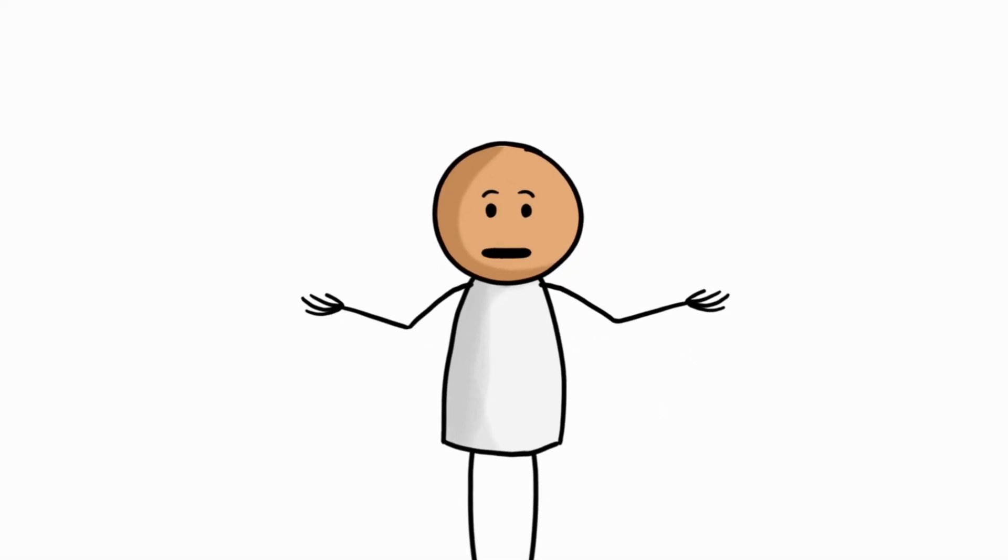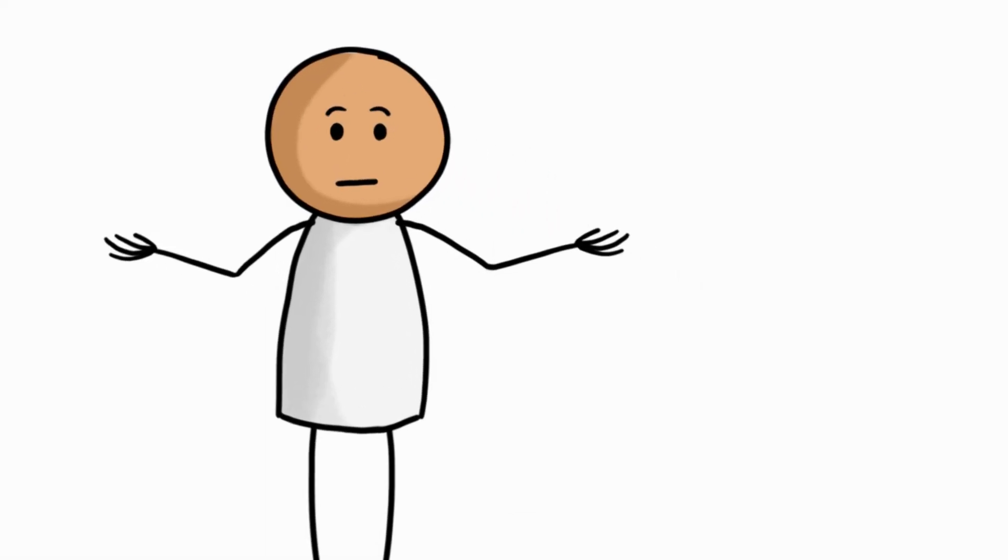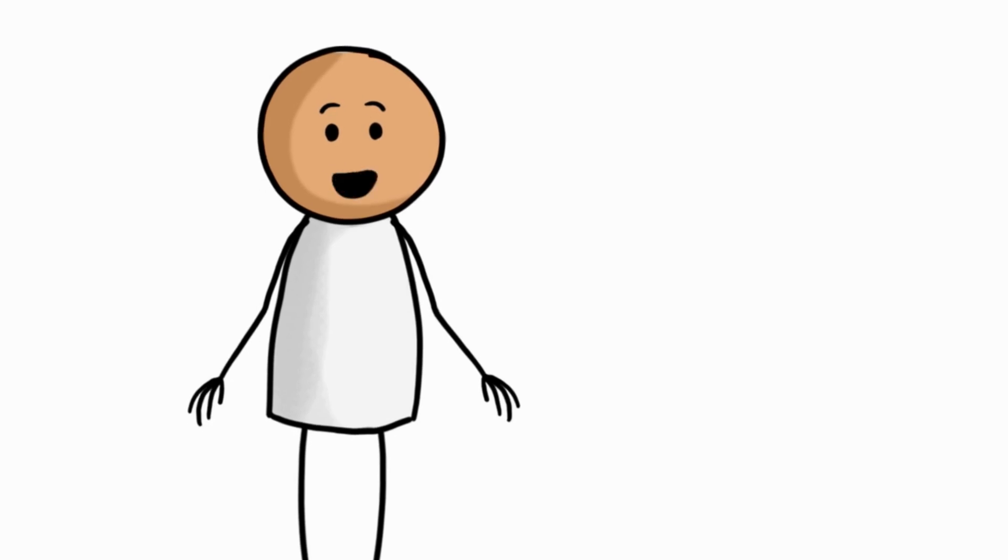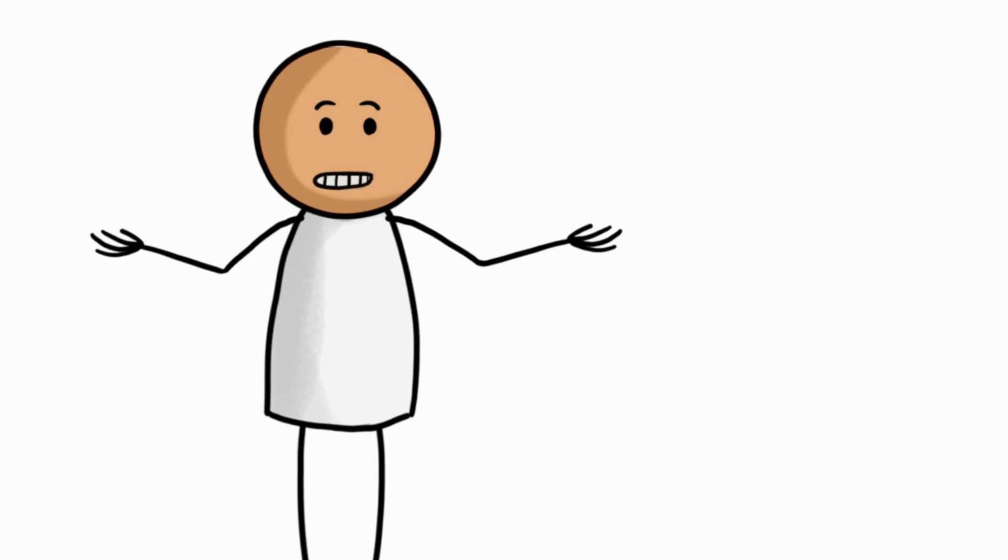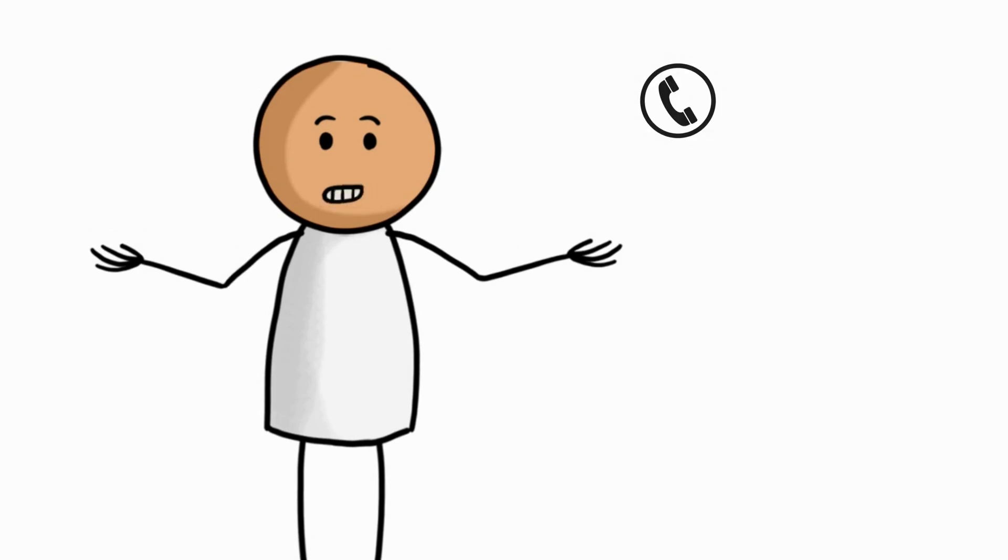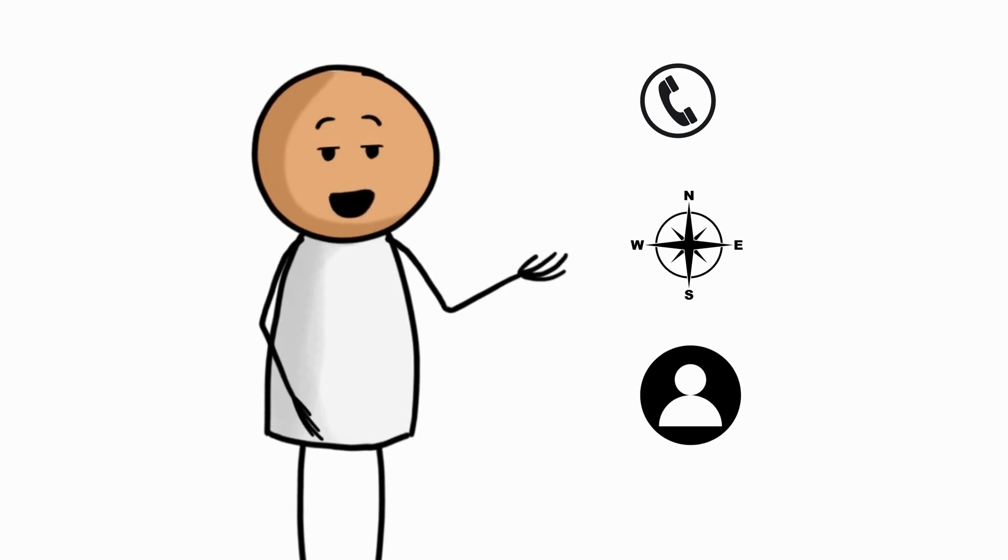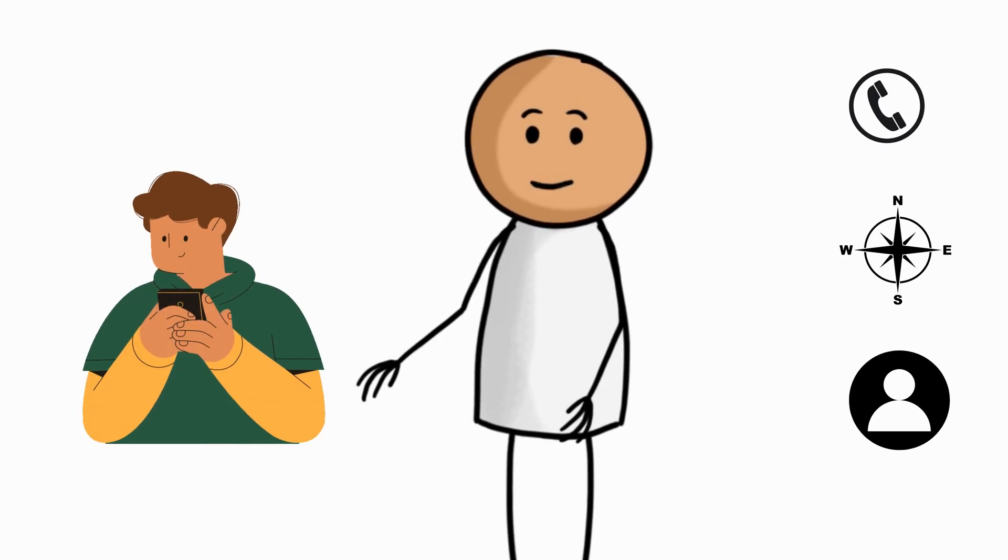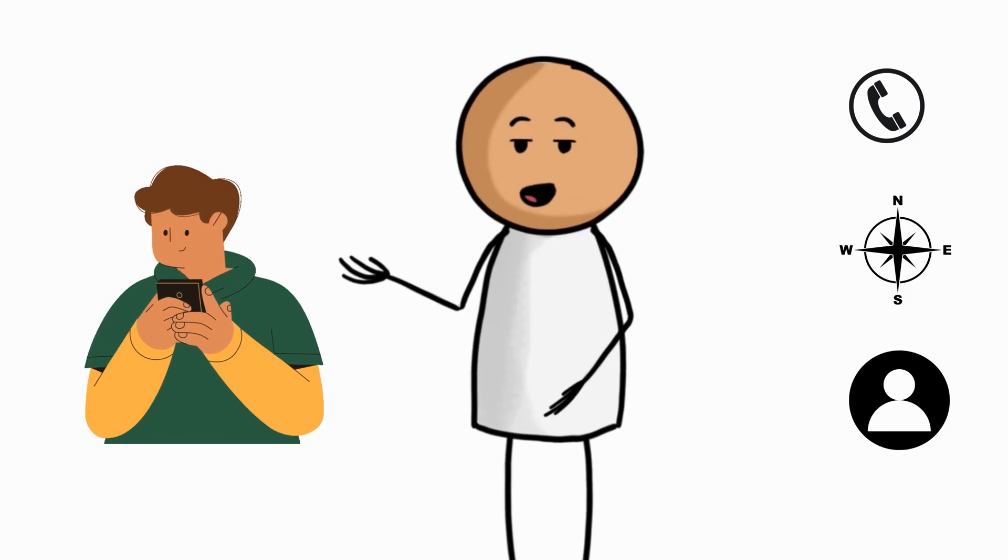Have you noticed how easy it is to forget things these days? Not the big stuff, but the small, everyday facts, the kind of information we used to store in our minds like it was second nature. Maybe it's a phone number, directions, or the name of someone you just met. Instead of remembering, we Google it, we type it in, we save it, and we move on. But have you ever wondered what's happening to your brain each time you do that?